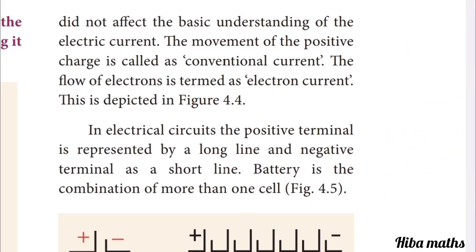The movement of positive charge is called conventional current. The flow of electrons is termed as electron current.